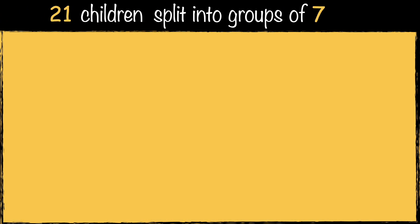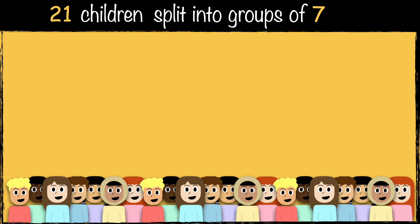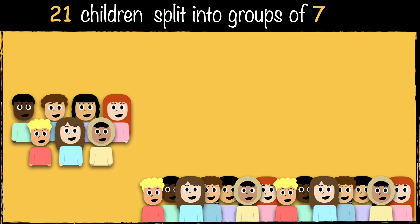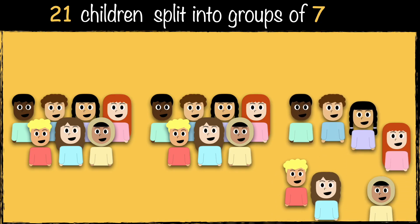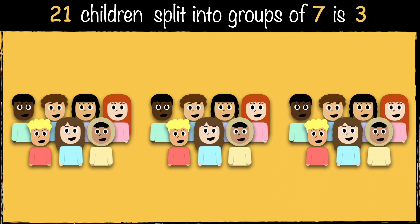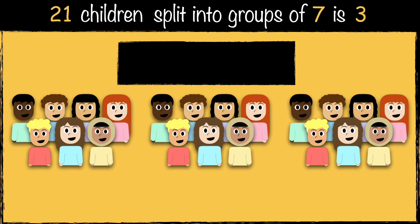Here's another example. There are 21 children and we need to organize them into teams of seven for a game. How many teams can we make? One, two, three. We've made three groups of seven with 21 children. This is how we write it as a calculation: 21 divided by seven equals three.